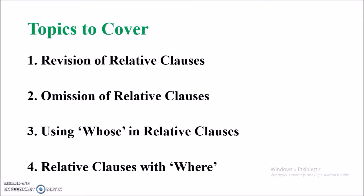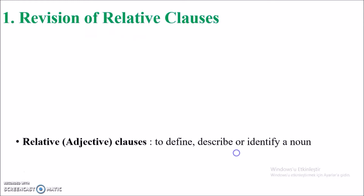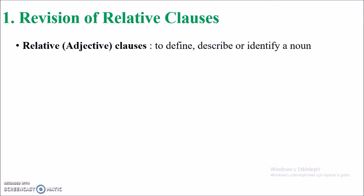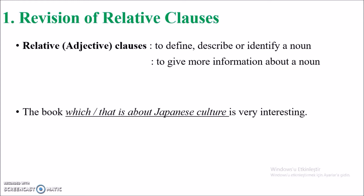Let's start with what a relative clause is. Relative clauses are used to define, describe, or identify a noun, or they give more information about a noun. For example: 'The book, which is about Japanese culture, is very interesting.' As you can see, the relative clause is underlined — it starts with the pronoun, then the verb, then the object.